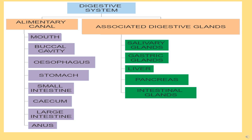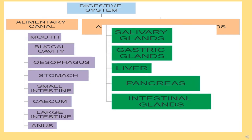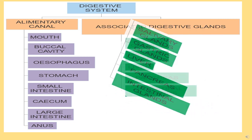The different digestive glands are salivary glands, gastric glands, liver, pancreas, and intestinal glands. These glands are responsible for digestion.